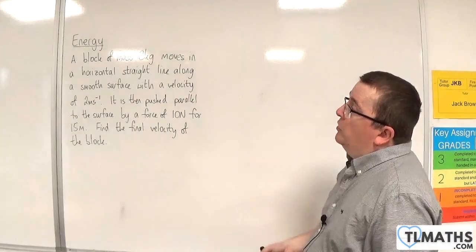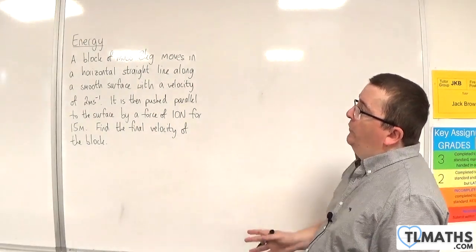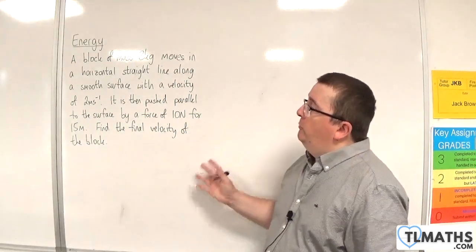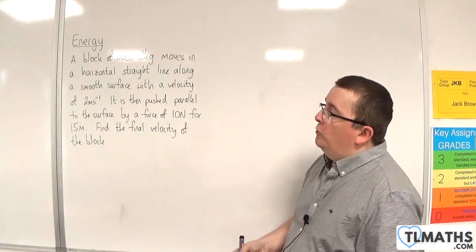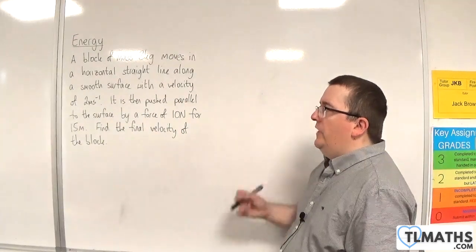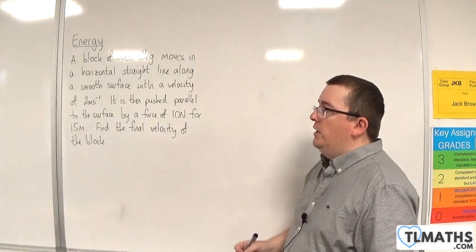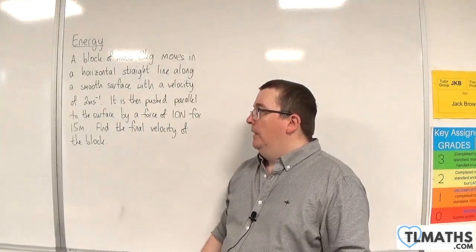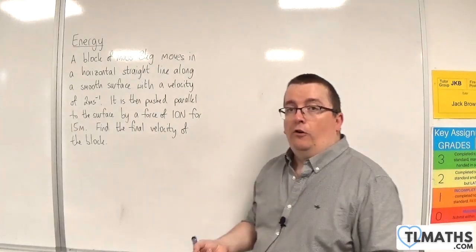In this problem, we have a block of mass 3 kilos which moves in a horizontal straight line along a smooth surface with a velocity of 2 metres per second. It is then pushed parallel to the surface by a force of 10 newtons for 15 metres. Find the final velocity of the block.